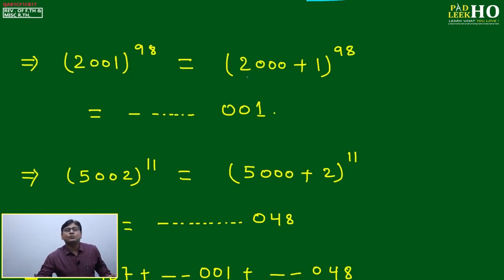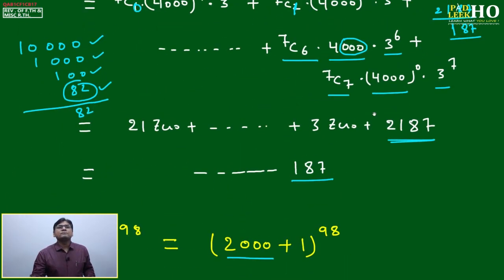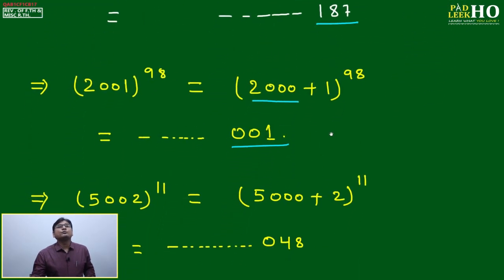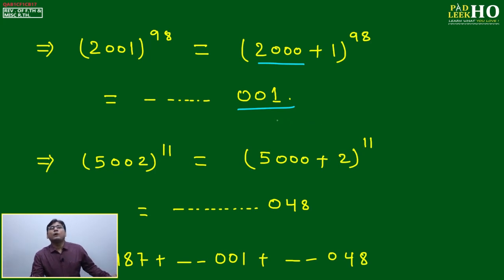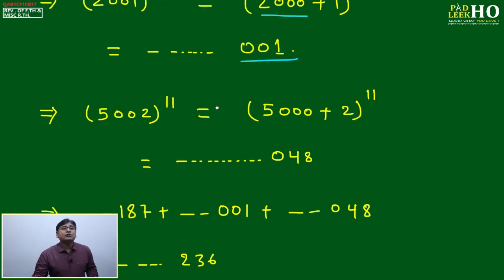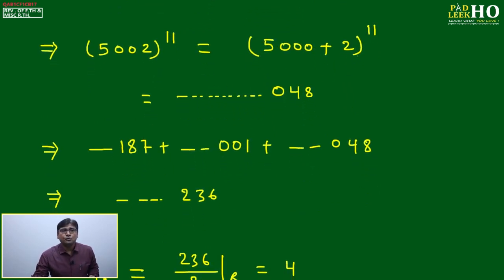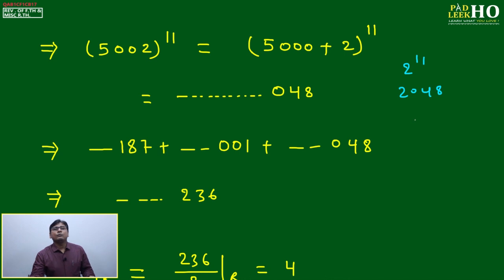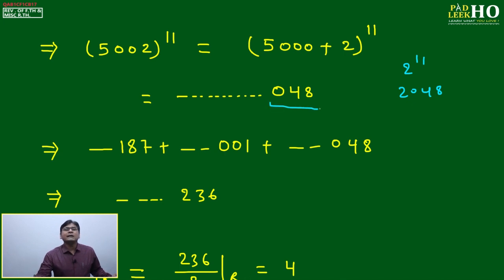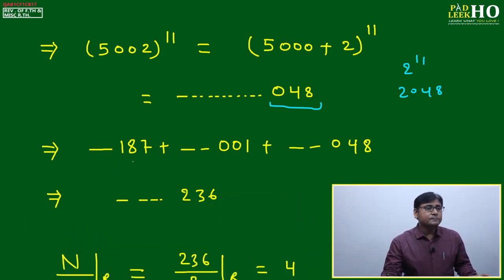For 2001^98 = (2000 + 1)^98: all terms except the last have at least three zeros. The last term is 1^98 = 1, so last three digits = 001. For 5002^11 = (5000 + 2)^11: only 2^11 matters. 2^11 = 2048, so last three digits = 048.